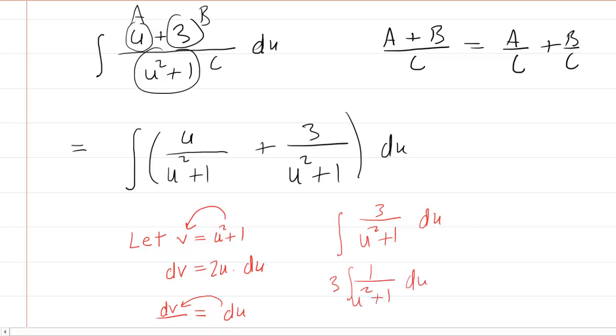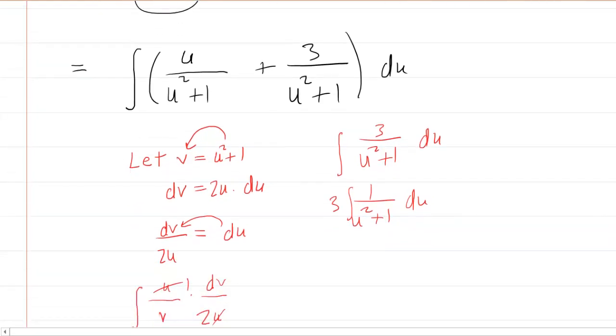And then you probably would need to consult a table of integrals. There might be one presented at the beginning of this section of your textbook. But many of us perhaps know that the integral of one over u squared plus one is actually just equal to the arc tangent of u. So this actually becomes three times the arc tangent of u.